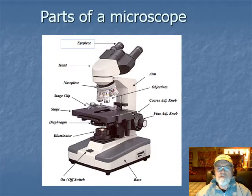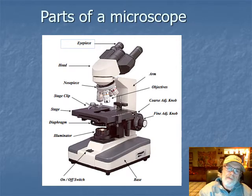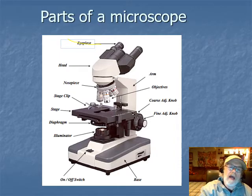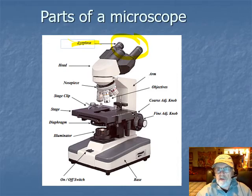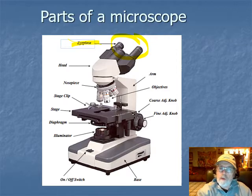Probably the first thing you need to know is the parts of the microscope, because they all have a special purpose. Let's go over these individually. This is the eyepiece - that's what you're going to look in. This is a binocular microscope because it has two eyepieces. There is monocular with only one tube to look through; this has two.